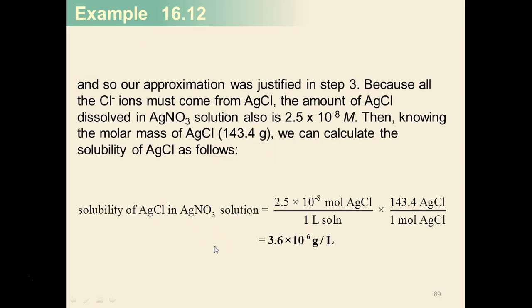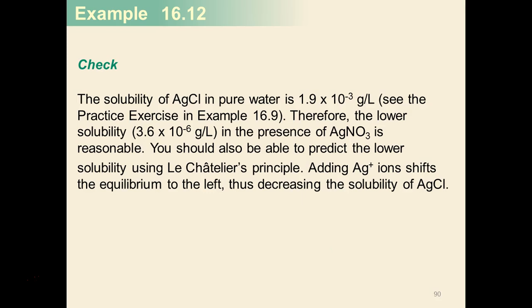So we take that value of s, moles of silver chloride, and we multiply by the molar mass of AgCl, 143.4 grams, to get the gram solubility, 3.6 times 10 to the negative 6 grams per liter.